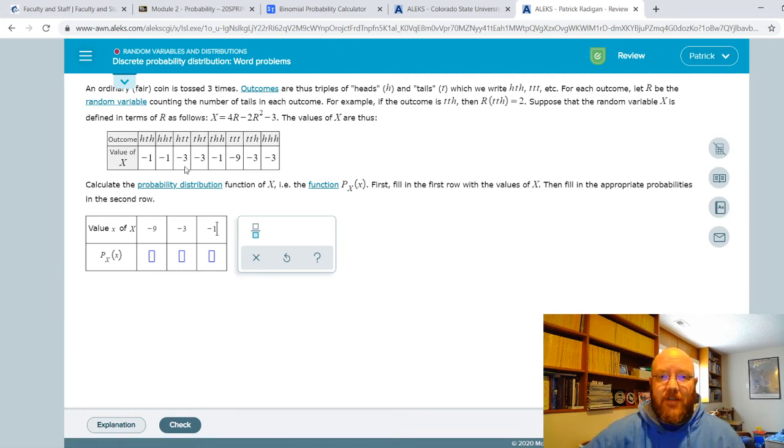Now we just have to calculate the chances of each one of those happening. It's going to ask us to do that in the fractional format. So there's eight total possible outcomes, one, two, three, four... eight. So all of these are going to be something out of eight. And then of course, we're going to have to reduce down that fraction.